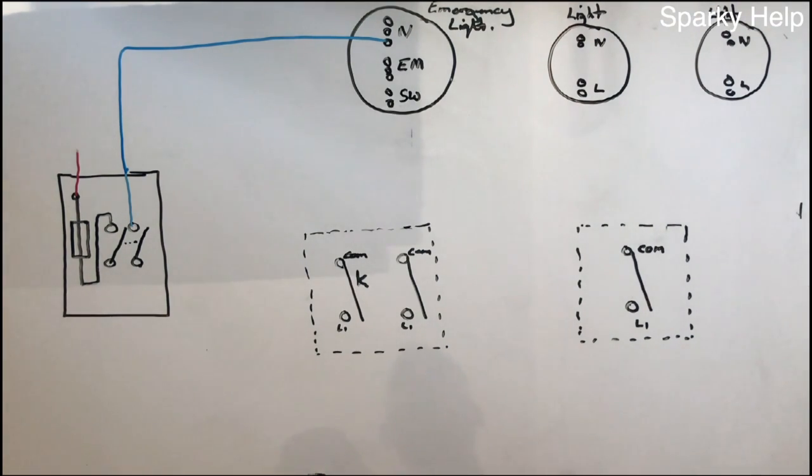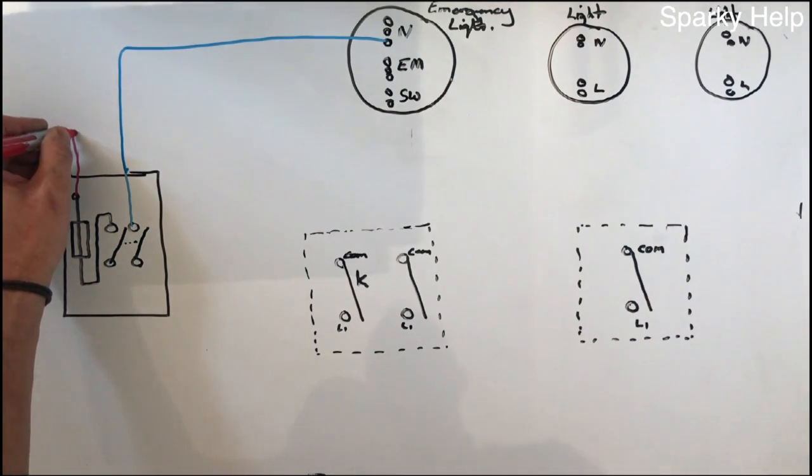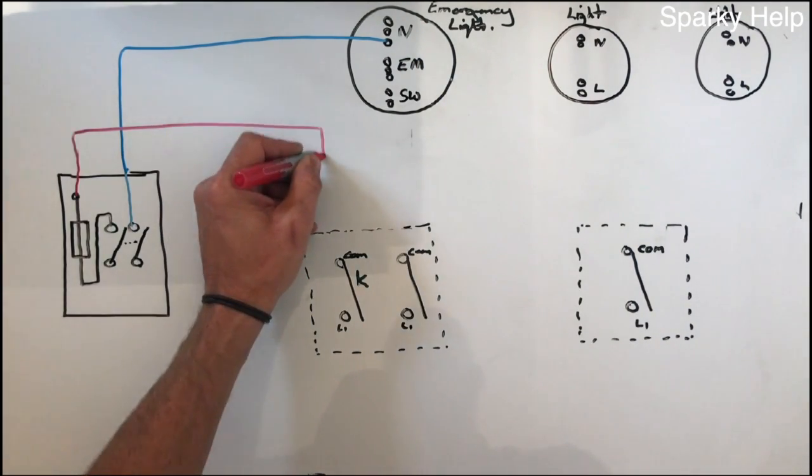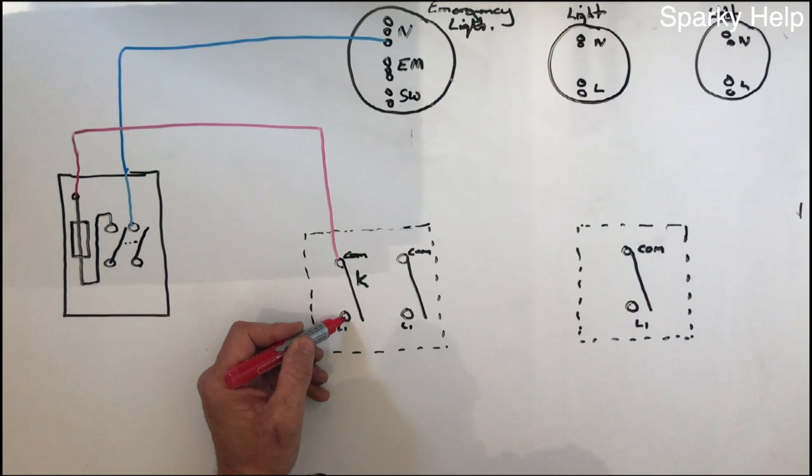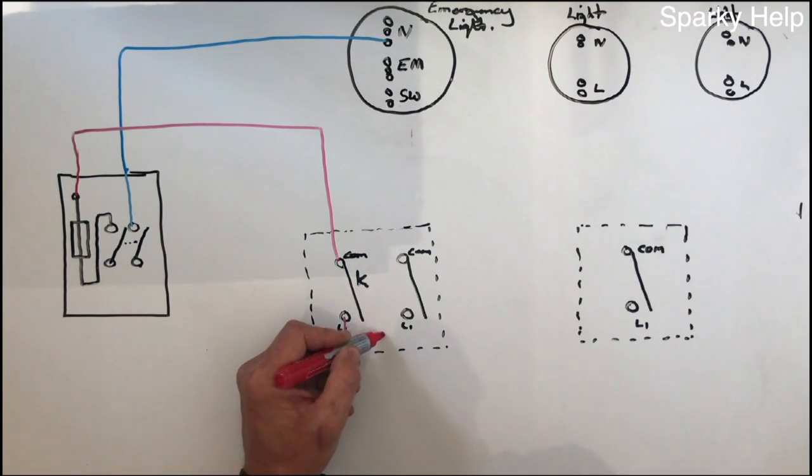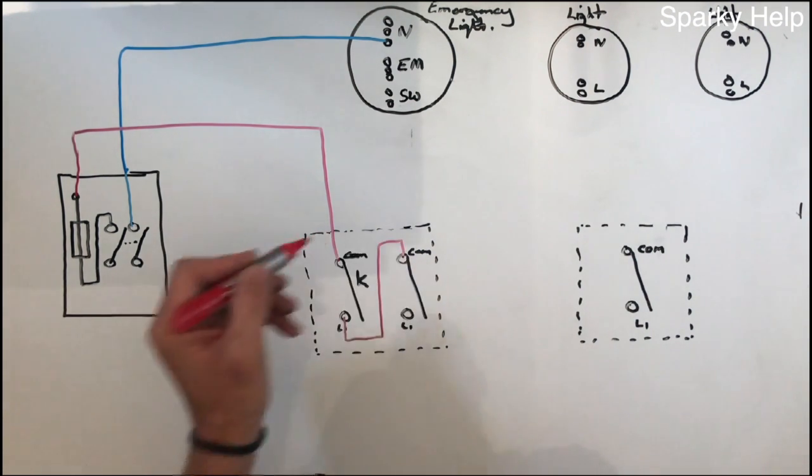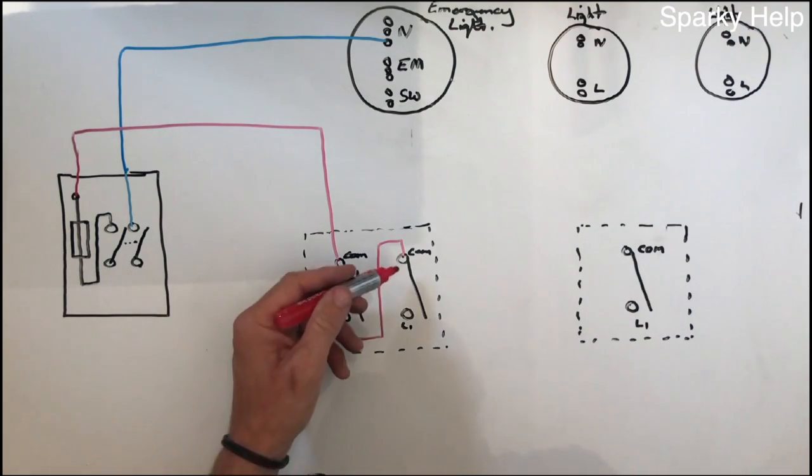So, how do we wire this one? Well, the feed will come out, doesn't need to go up here, because we don't need it up there, so what we do is we take it into the key switch first. So in the top of the key switch, this then will link out, and go into the top of the common.